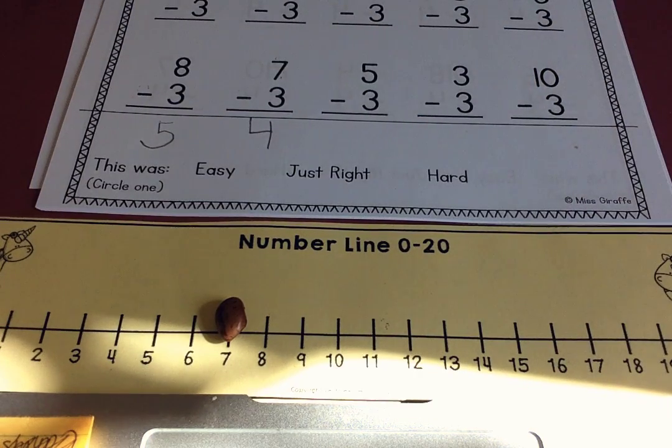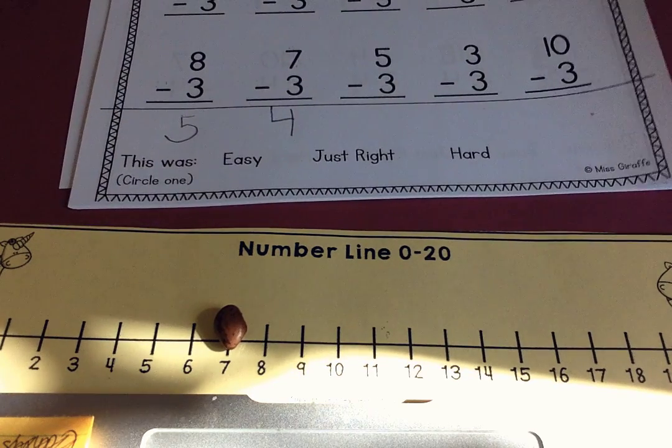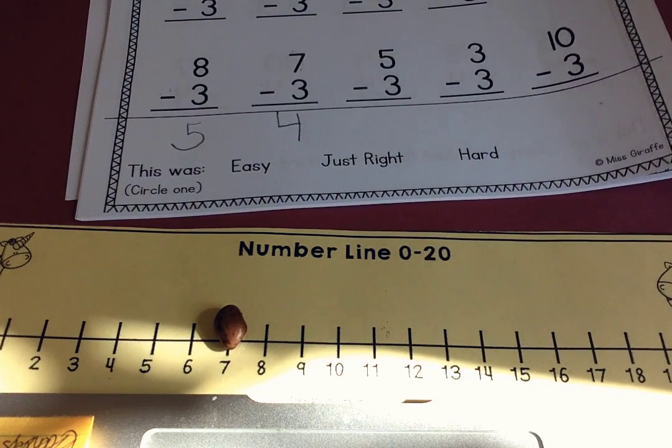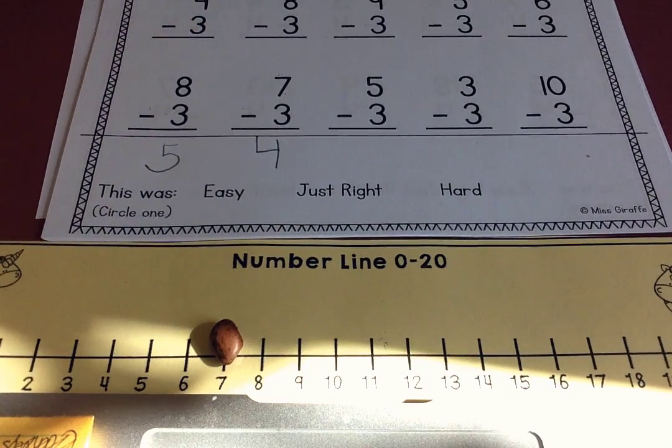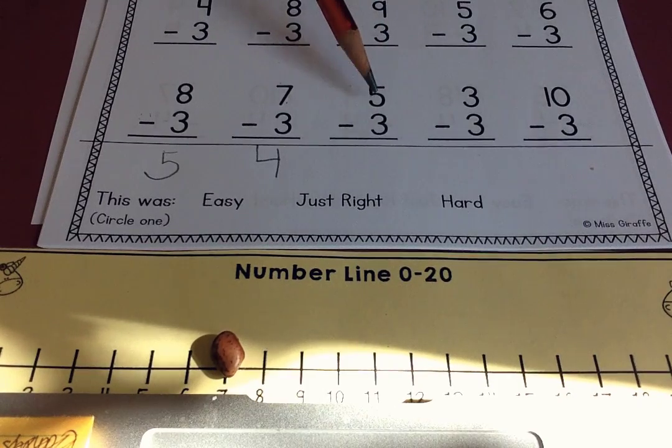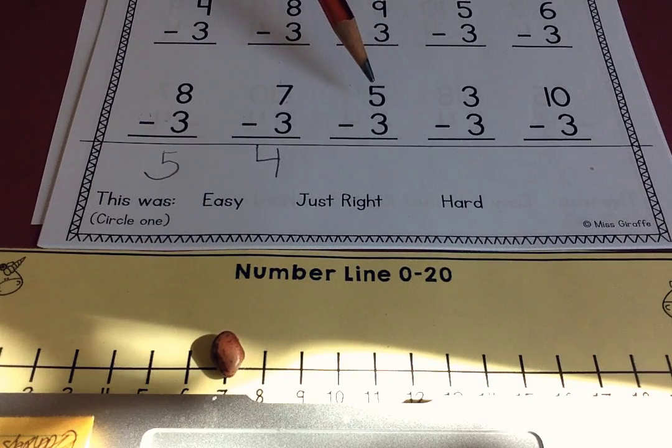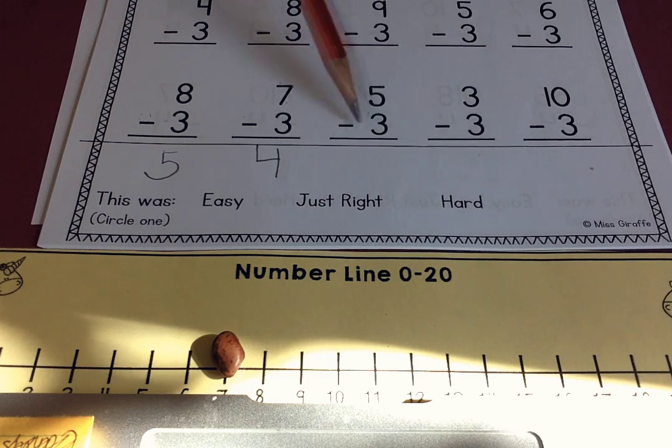I've given you lots and lots of subtraction pages because I want this to get really super easy for you because after a while you might know the answer. Like with this one, you don't need to use a math rack. Five, five take away three. You can think of your number bonds. What's three plus what makes five?